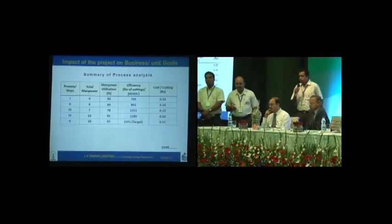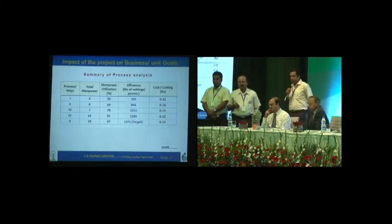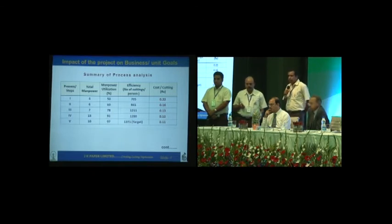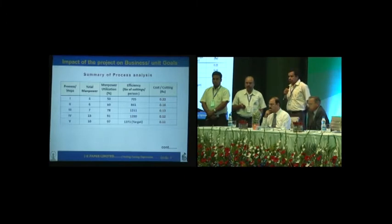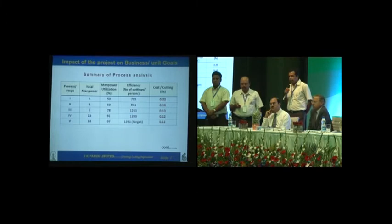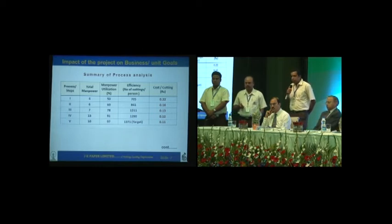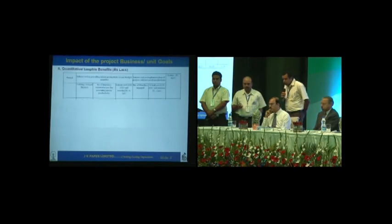In the summary of process analysis, we took a total of five steps. Though there was an increase in manpower, manpower utilization increased from 50 percent to 97 percent, and the number of cuttings increased from 705 to 1,371 cuttings — a significant cost reduction through process analysis.